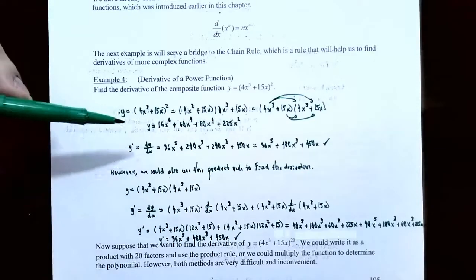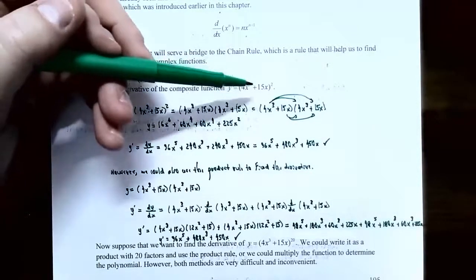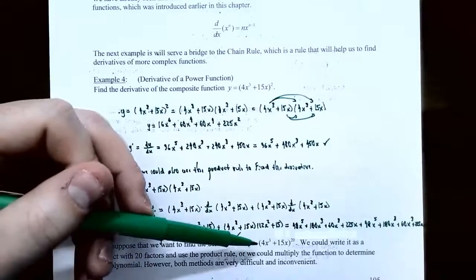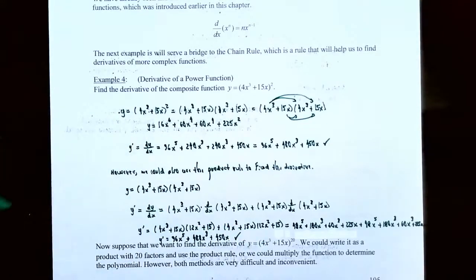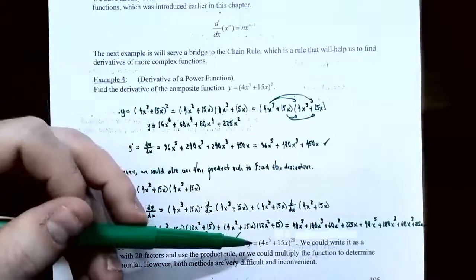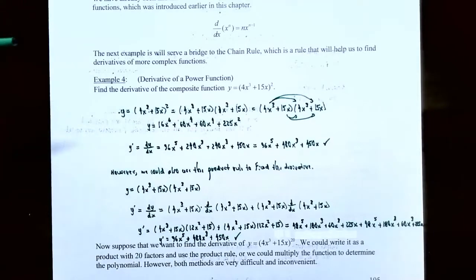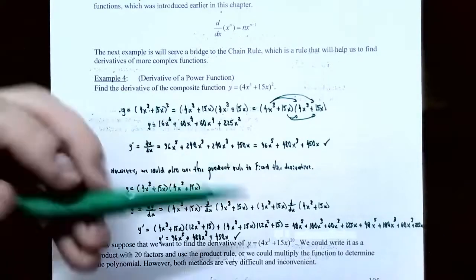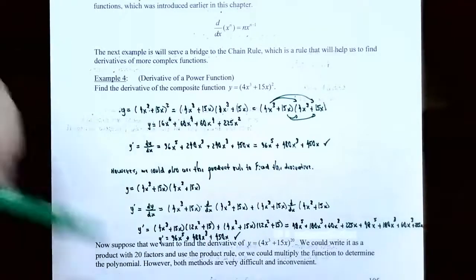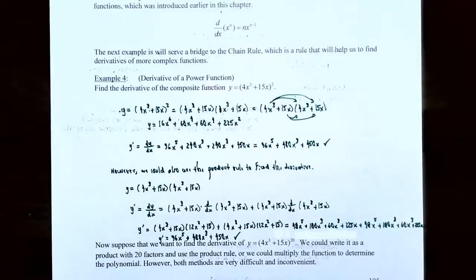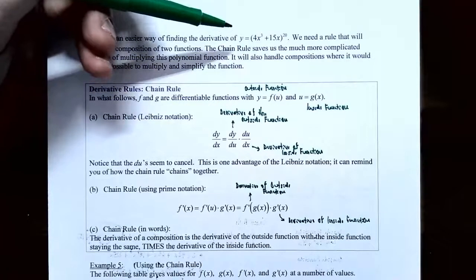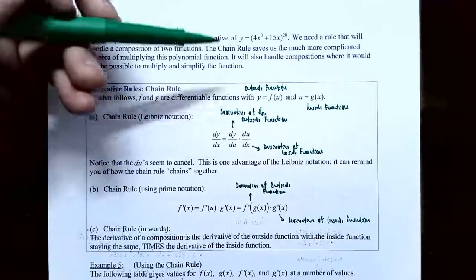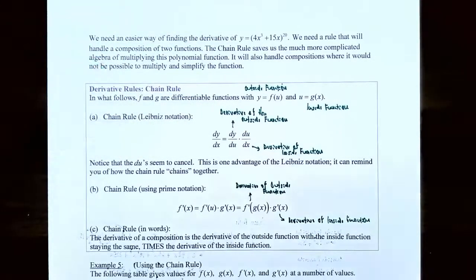Notice there was a lot of algebra for this composite function raised only to the second power. Suppose instead you need the derivative of y = (4x³ + 15x)²⁰. You do not want to expand this as 20 multiplications, and the product rule only applies to two functions multiplied together — not 20. We need an easier way. The chain rule handles compositions where it would not be possible to multiply or simplify easily.